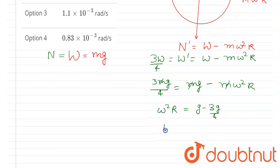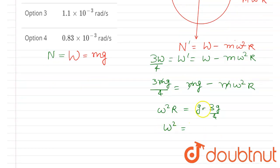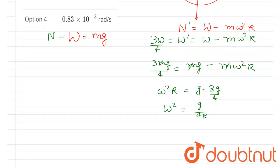So you will get ω² is equal to, so g minus g/4 is g/4R, right?